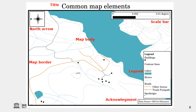Here we see an example of a map. We see the title here on the top. We see a north arrow pointing to the left, because this map is rotated. And we see a scale bar with units in degrees — it is more common to see units in meters. Here we see a legend, which is the key to the features on the map. And here are acknowledgements.